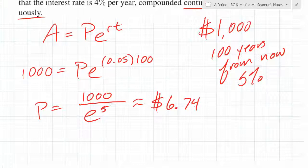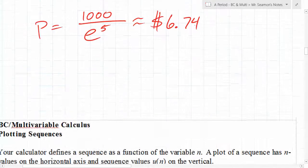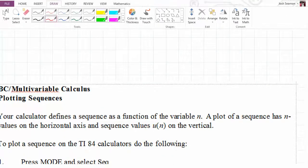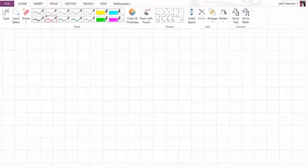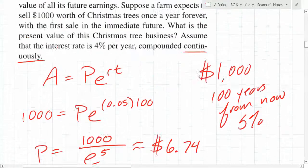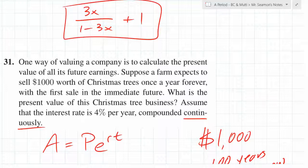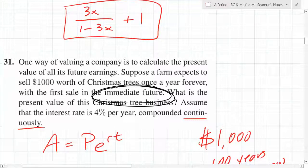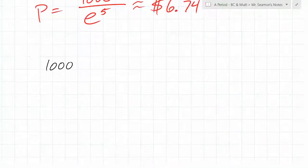And we're not even accounting for inflation. So here's the deal — if you have $1,000 right now, it's $1,000 right now. We're going to write this series out. The problem says 'with the first sale, immediate future' — that means $1,000 has gone in right now. There's the first $1,000. But the present value of $1,000 at the end of one year: 1000 = Pe^(0.04 times 1), so P = 1000 over e^(0.04).